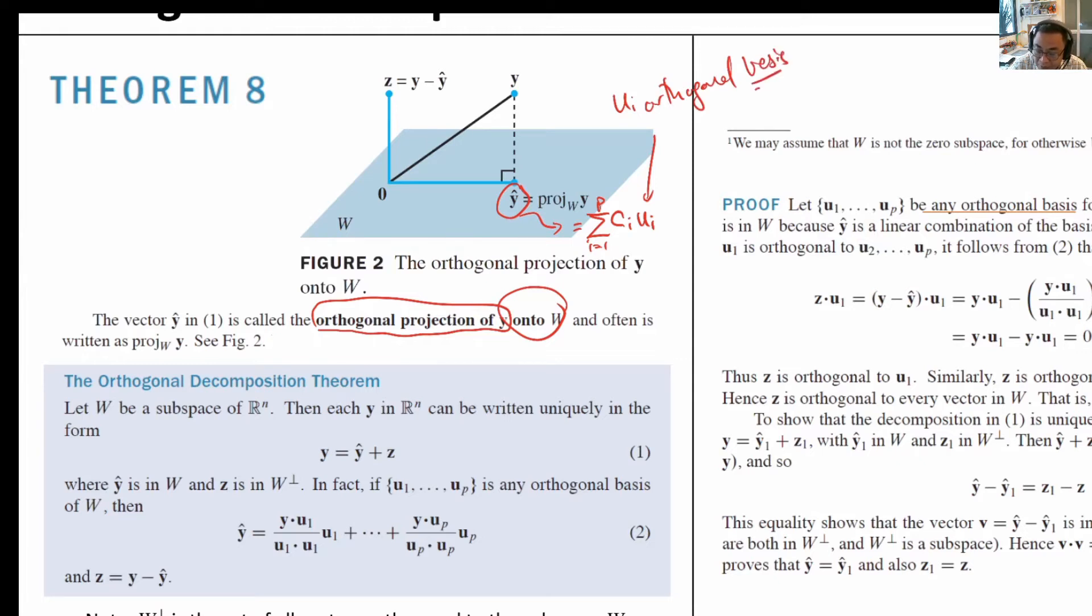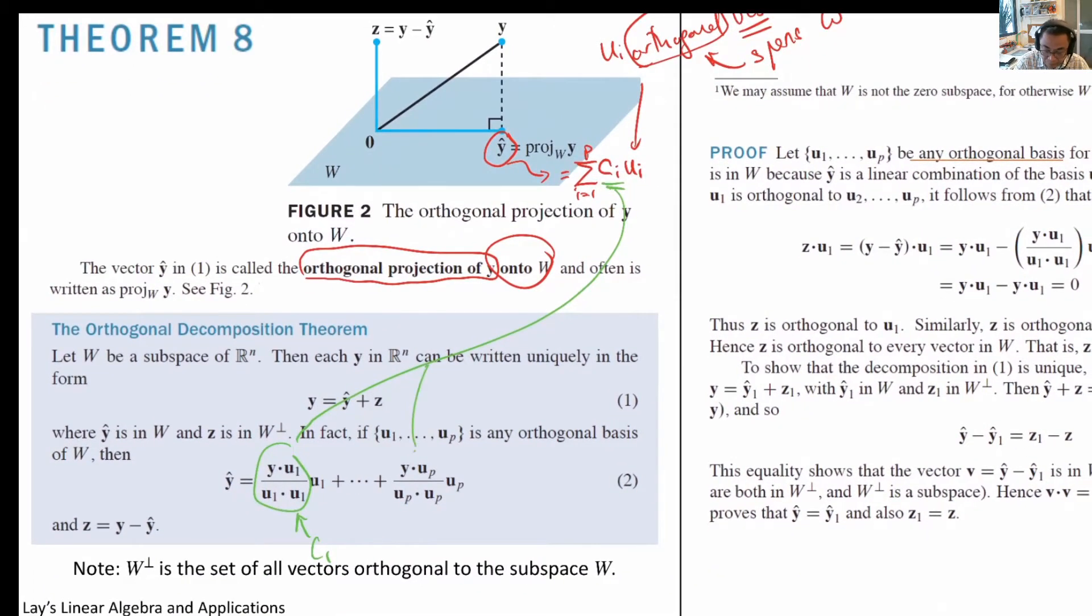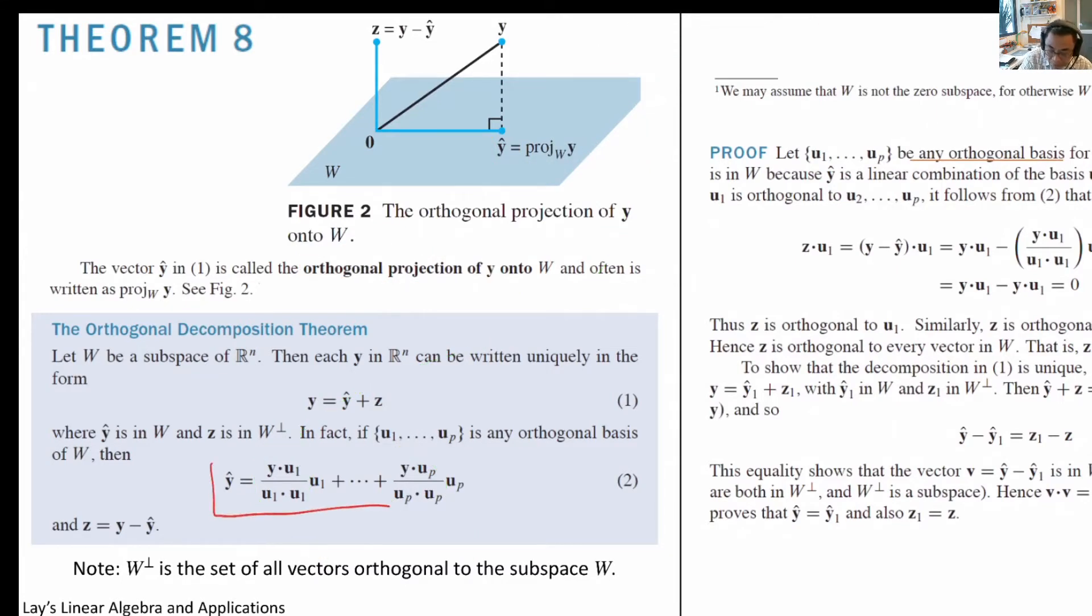Remember that basis means a set of vectors that spans w. Not only do they span w, they are also orthogonal. In the last lecture, we found that to find ci for orthogonal basis, we can use this formula. Where this is c1, this is cp. This equation is therefore the equation that we will apply to find y hat, the best approximation of y in the space of w.